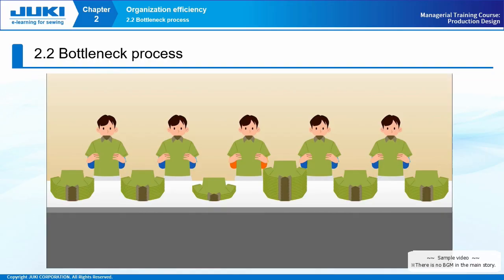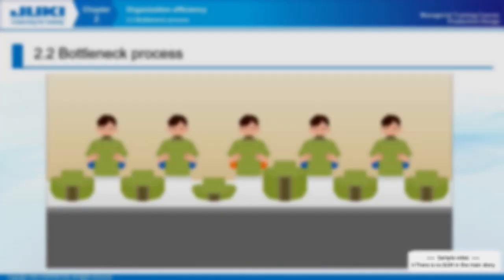2-2 Bottleneck Process. In 2-1, we learned about the importance of line balance and layout. In this section, you will learn about the bottleneck process that must occur in the line.